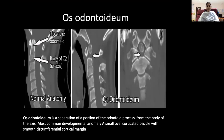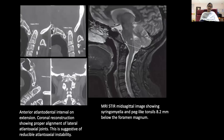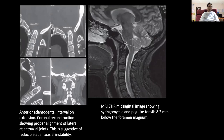Os odontoideum. This is the normal anatomy at the tip of the odontoid and the body of the axis. Os odontoideum is a separation of a portion of the odontoid process from the body of the axis — the most common developmental anomaly — presenting as a small oval corticated ossicle with smooth circumferential cortical margins. This is the anterior atlanto-dental interval on flexion, neutral, and extension positions, showing the distance is reduced. Coronal reconstruction shows proper alignment of lateral atlanto-axial joints, suggestive of reducible atlanto-axial instability.